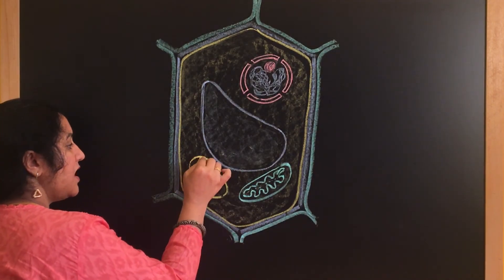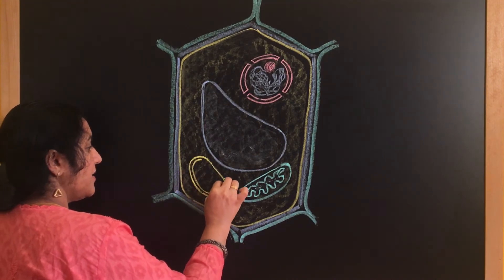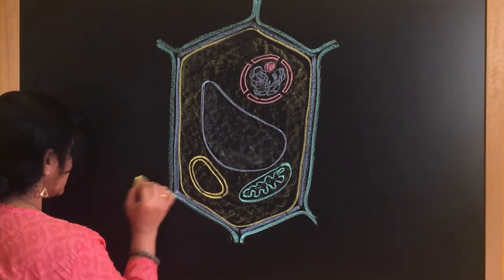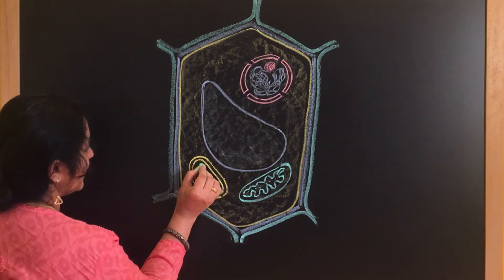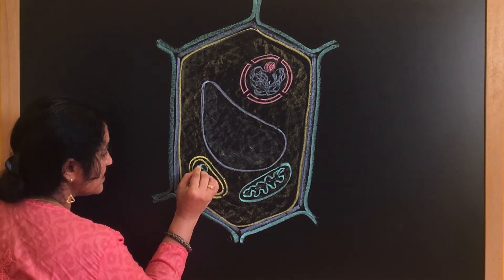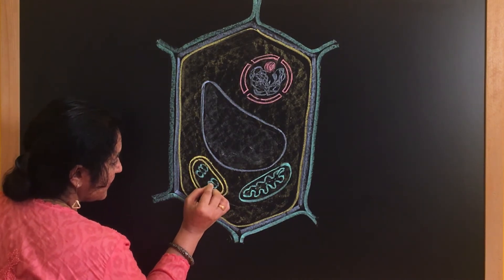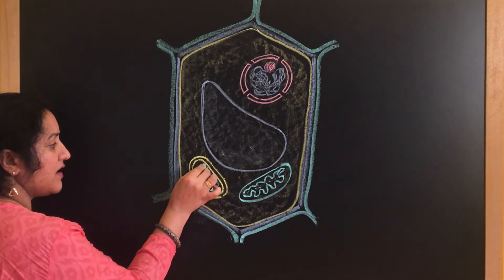Chloroplast has an outer membrane. It has an inner membrane. And what is there inside? It will be having certain disc-shaped structures, and these disc-shaped structures are called thylakoids.